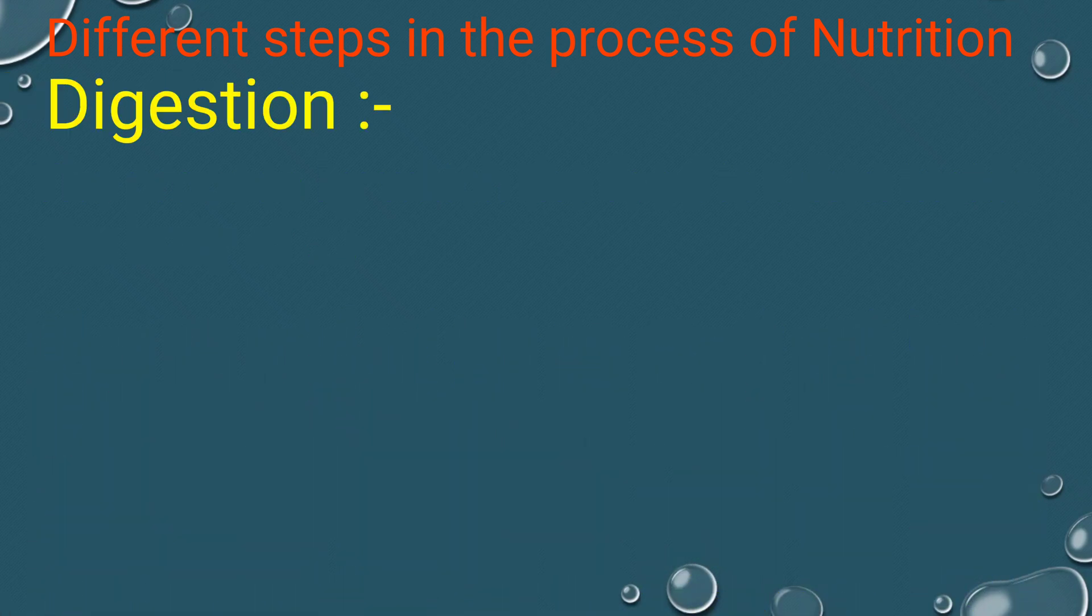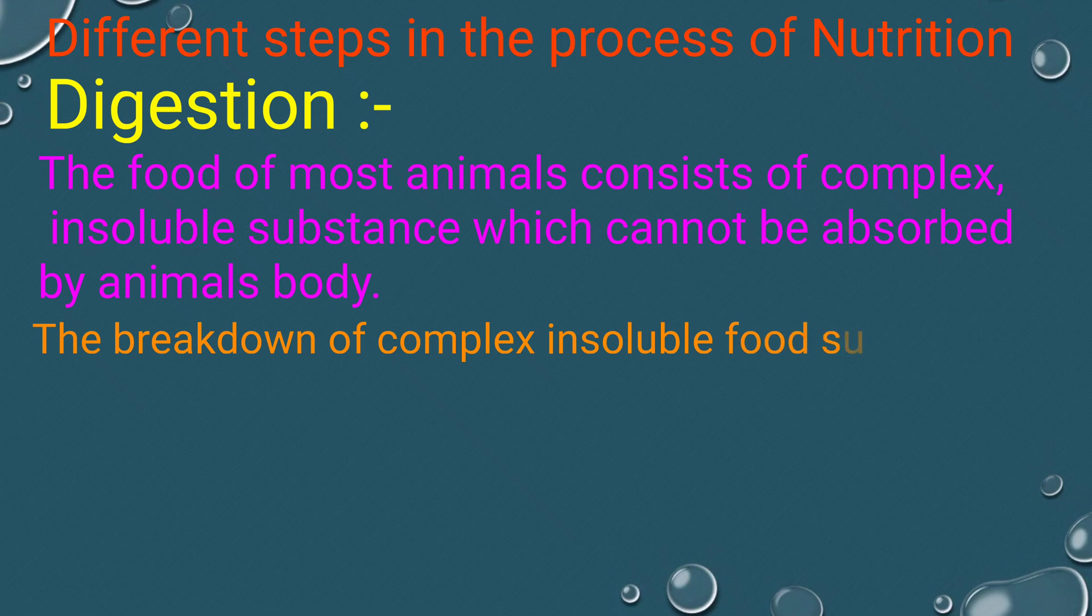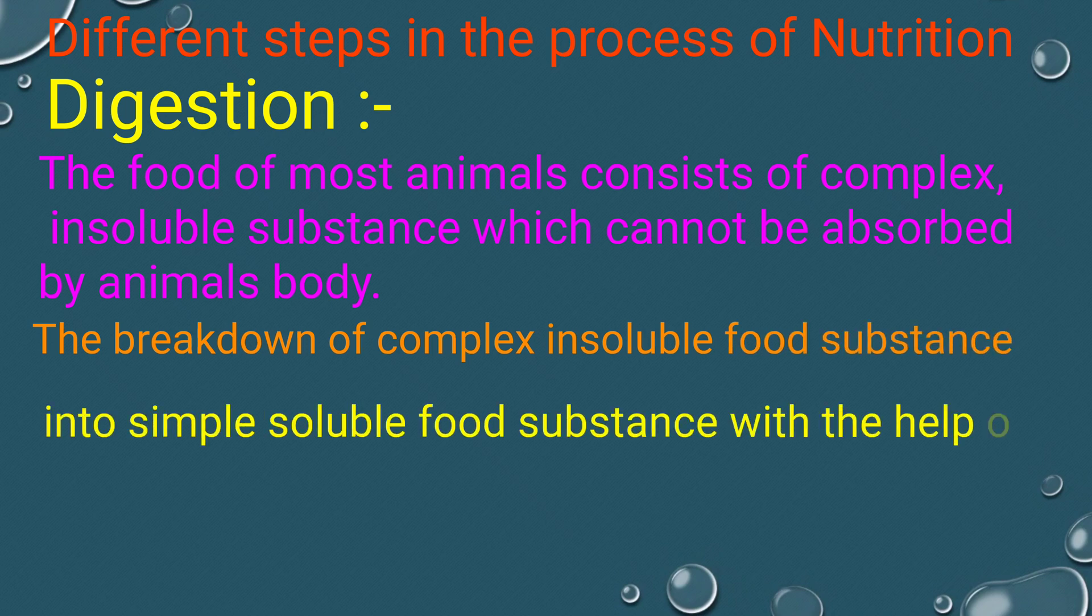Digestion. The food of most animals consists of complex, insoluble substances which cannot be absorbed by the animal's body. The breakdown of complex insoluble food substances into simple soluble food substances with the help of digestive juices prepared by the body is called digestion.